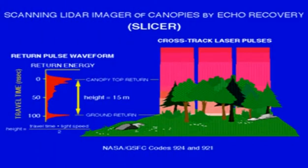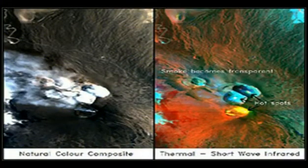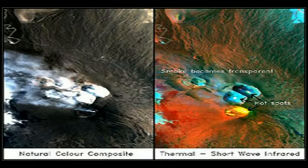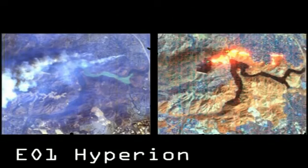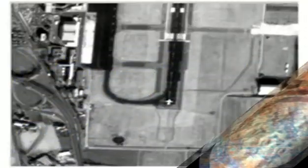It would be of great benefit if the capabilities of airborne sensors such as Slicer, which provides high-resolution three-dimensional measurements sensitive to the vertical organisation of forest canopy structure, and DAIS or Digital Airborne Imaging Spectrometers, which provide high-resolution hyperspectral imaging data of the terrain below, could be replicated in space. The accuracy of remote sensing technology will improve due to hyperspectral sensors like the EO1 Hyperion, as well as hyperspatial sensors like the IKONOS and Eros A1 Pan.